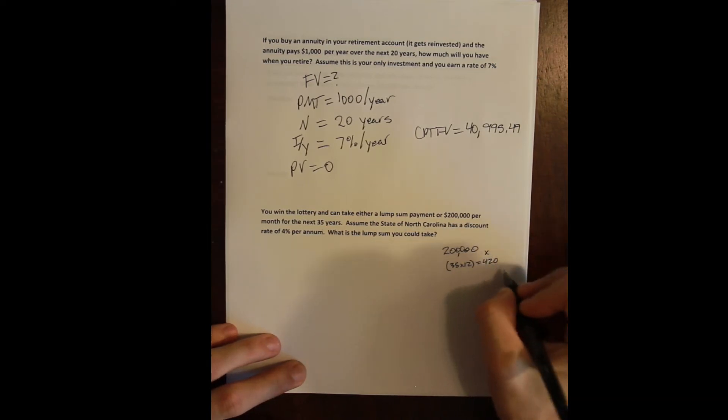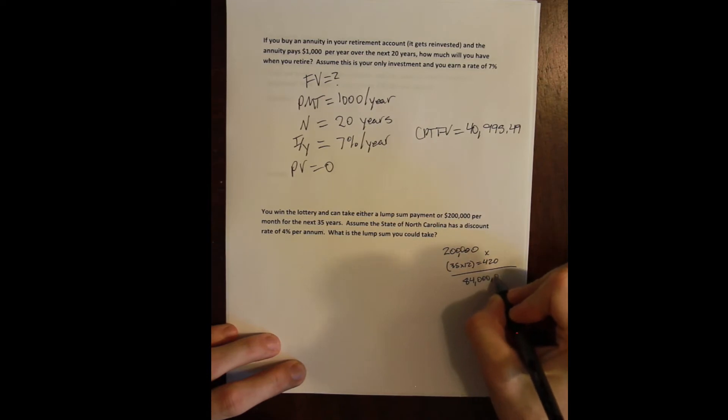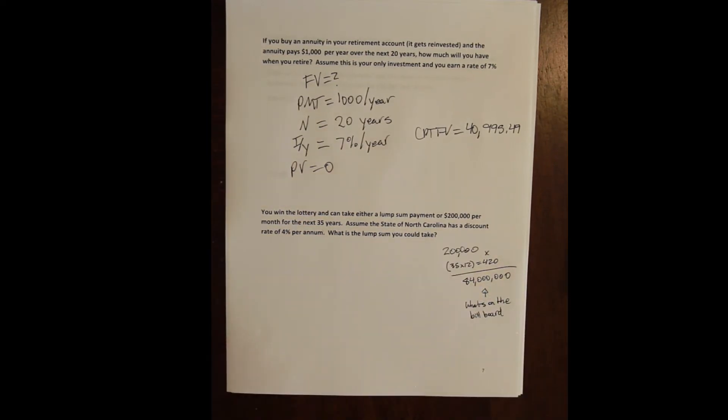So $200,000 times 420 is 84 million. This is what's on the billboard. But you're never going to win that.